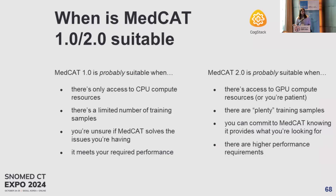When would you choose one or the other? This will depend on your hospital or requirements. MedCAT 1 is probably suitable when you've only got access to CPU compute resources, if you've got fewer training samples, or if you're testing the waters. If it already meets your required performance for your task, you don't need to go any further. MedCAT 2.0 is probably suitable when you've already got access to GPU resources, if you've got plenty of training samples or you're willing to commit to the higher computational requirements.